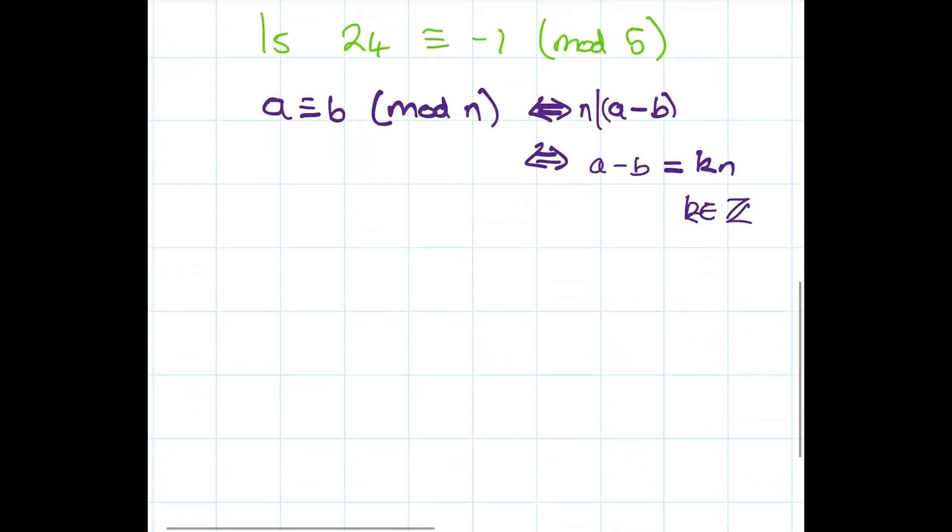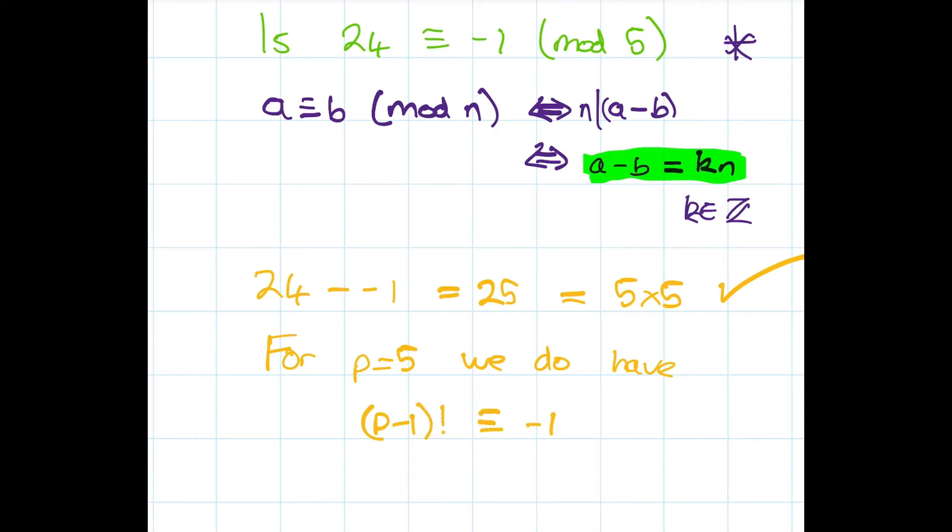Let's check this condition. Is 24 minus minus 1 a multiple of 5? Let's have a look. 24 minus minus 1 equals 25, which equals 5 times 5. So yes. Summarizing, for P equals 5 we do have P minus 1 factorial is congruent to minus 1 mod P. Excellent.